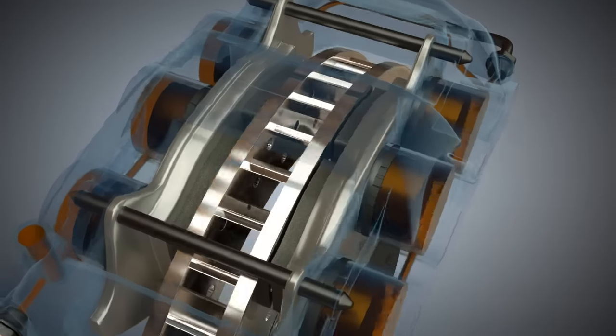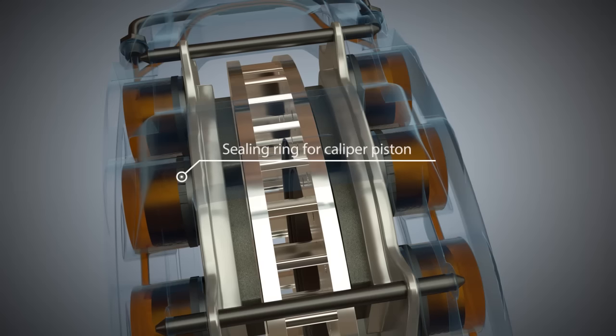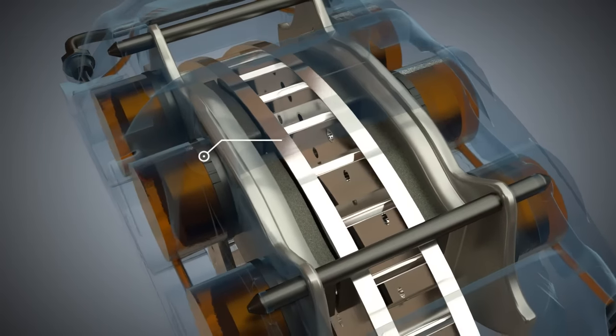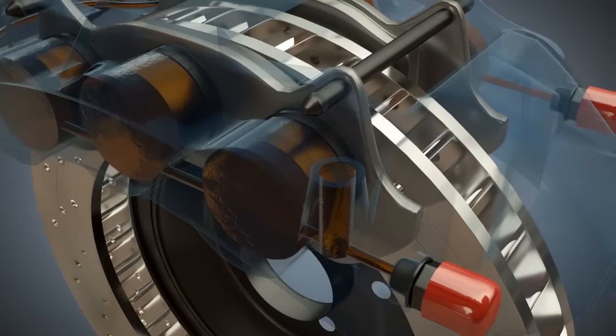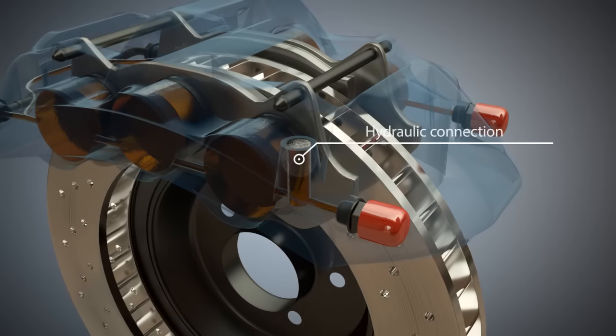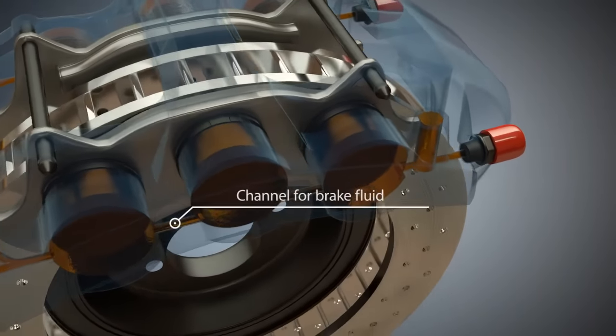Caliper pistons are controlled by brake fluid and sealed with the help of sealing rings. Brake fluid enters the channels of the caliper via a hydraulic connection. The caliper pistons on the opposite side are supplied with brake fluid via one or more channels.